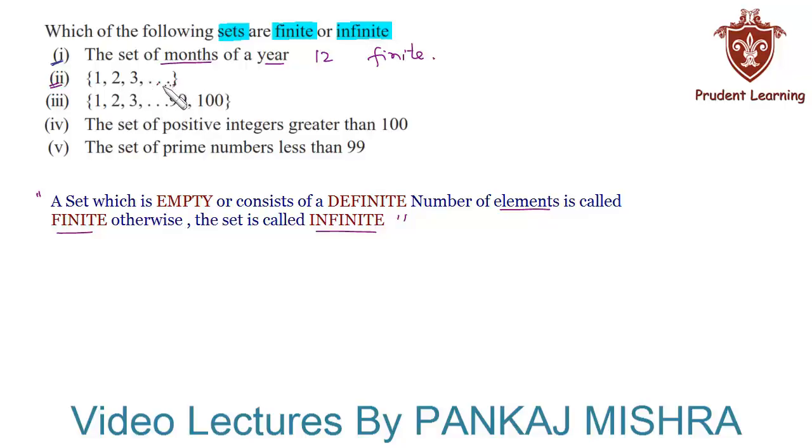Moving on to the third section, again the given set is in roster form where we have elements 1, 2, 3, all the way up to 99 and 100. Actually, it is nothing but the set of first 100 natural numbers, so this set will consist of 100 elements. Hence we will say that it is a finite set.